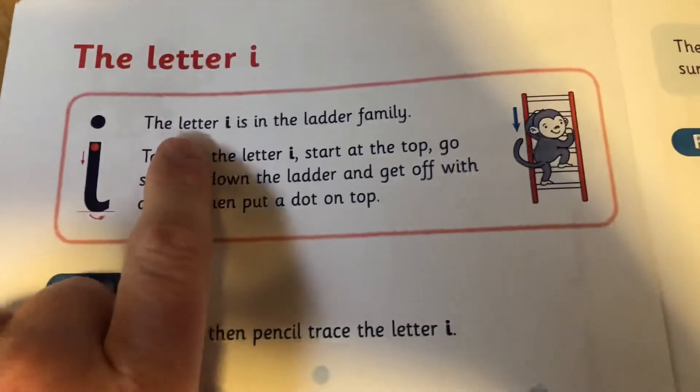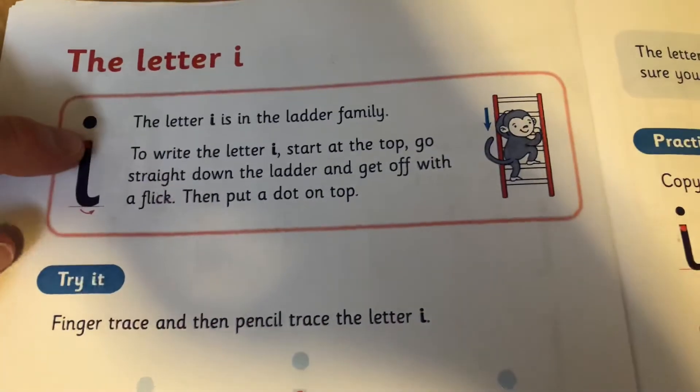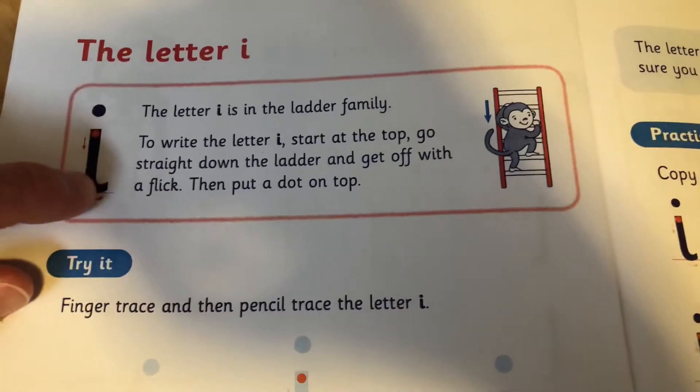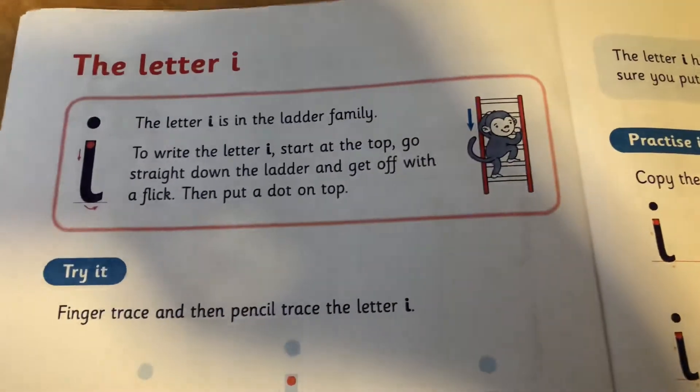So it says, the letter I is in the ladder family. Write the letter I, start at the top, go straight down the ladder and get off with a flick. Then put a dot on the top.